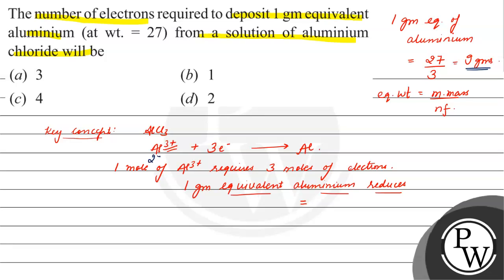The molar mass is 27, that is, 27 grams requires 3 moles of electrons. For 9 grams, we need (3/27) × 9 = 1 mole of electrons. That is 1 mole.